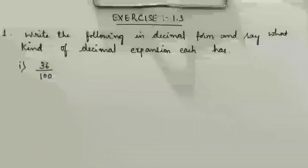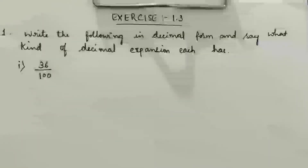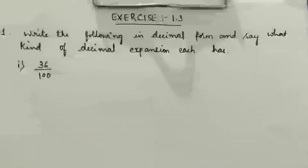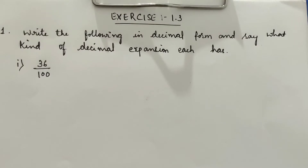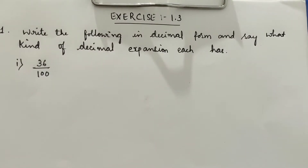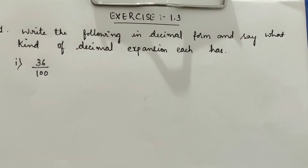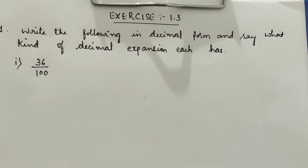Greetings to all. This is the session for 9th standard, 1st chapter, number system, exercise 1.3. The first question is: write the following in decimal form and say what kind of decimal expansion each has.